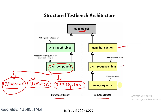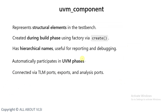The second branch is the sequence branch, which has uvm_transaction, uvm_sequence_item, and uvm_sequence. A uvm_component represents structural elements in the test bench. It is created during the build phase via the UVM factory's create method. UVM components have hierarchical names used for reporting and debugging, automatically participate in UVM phases, and are connected via TLM ports, exports, and analysis ports.